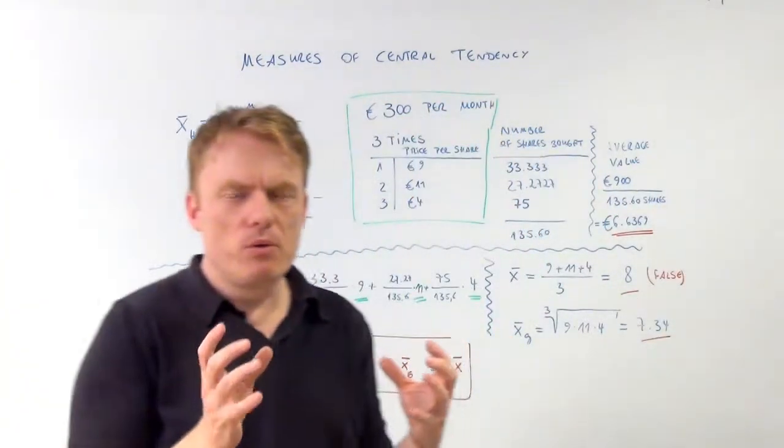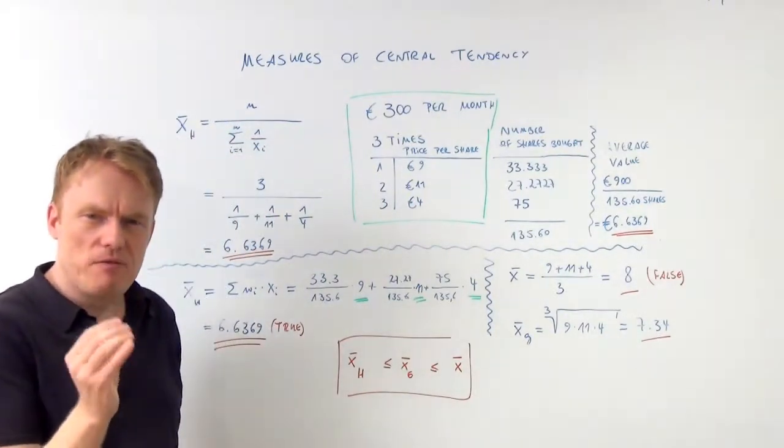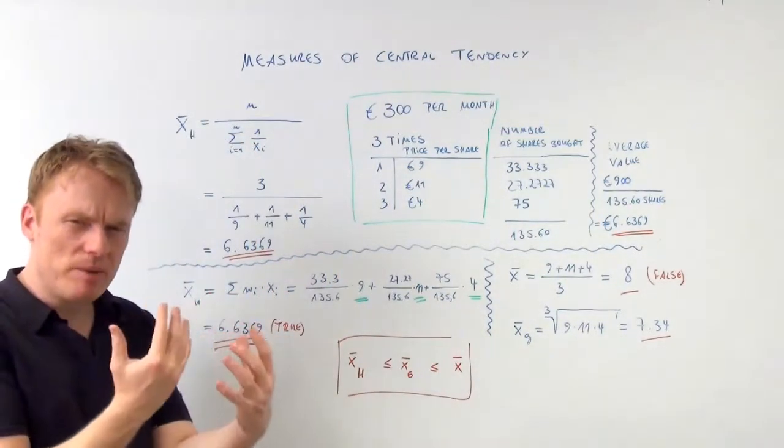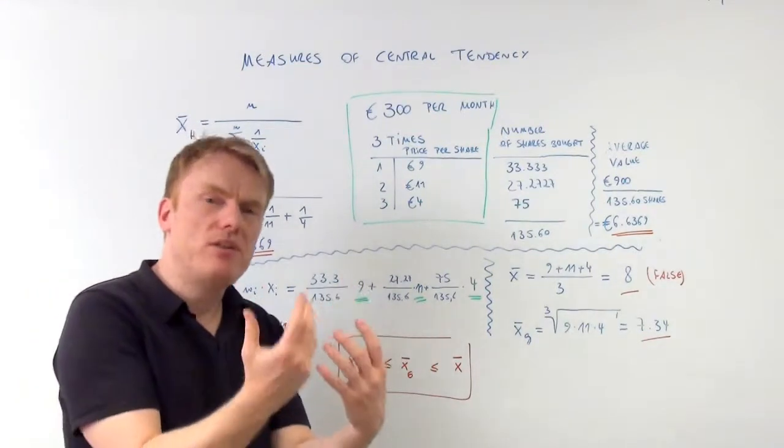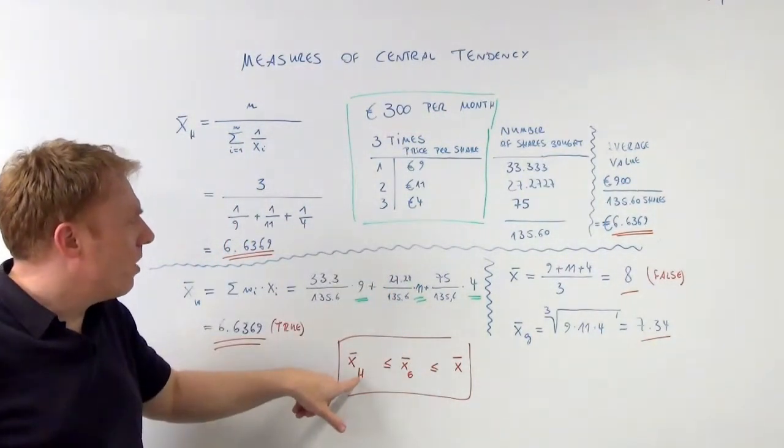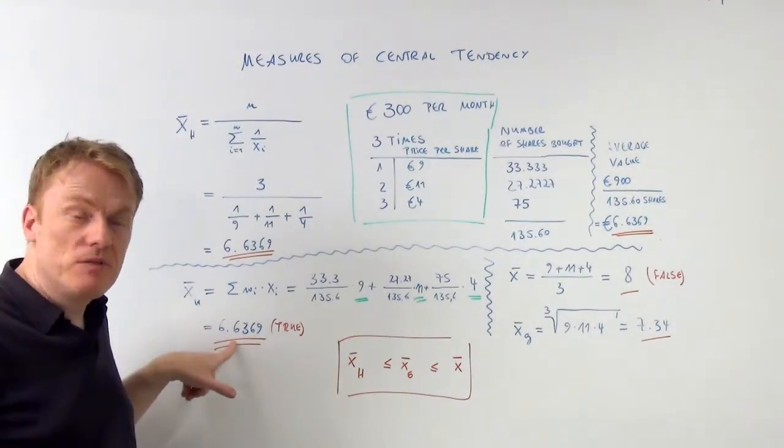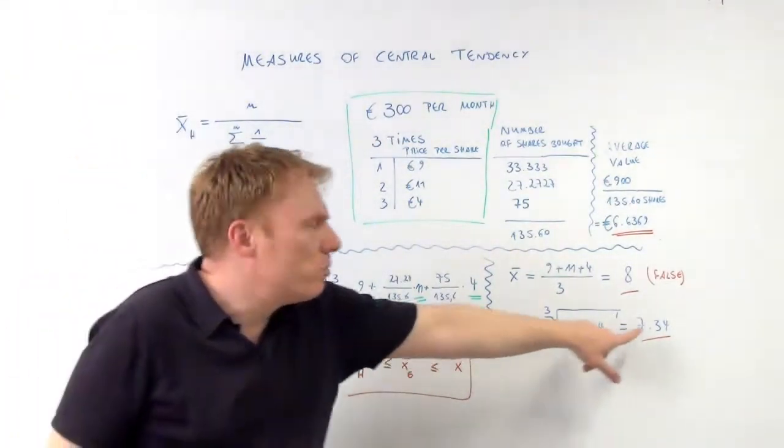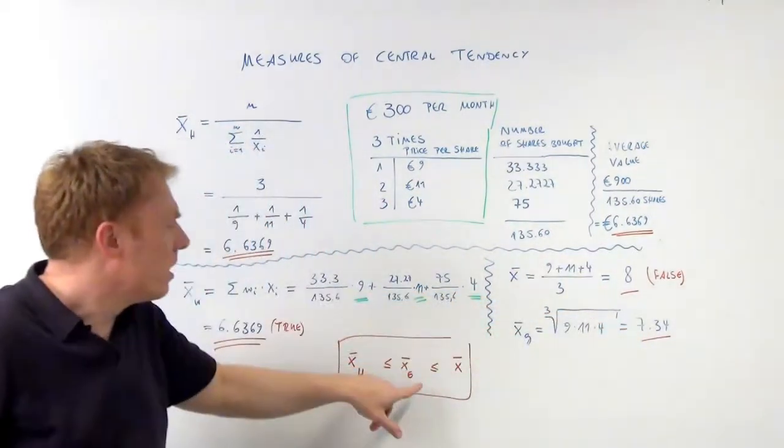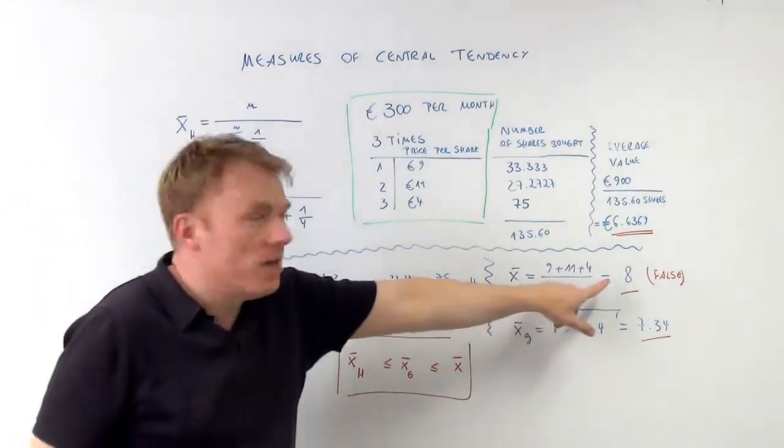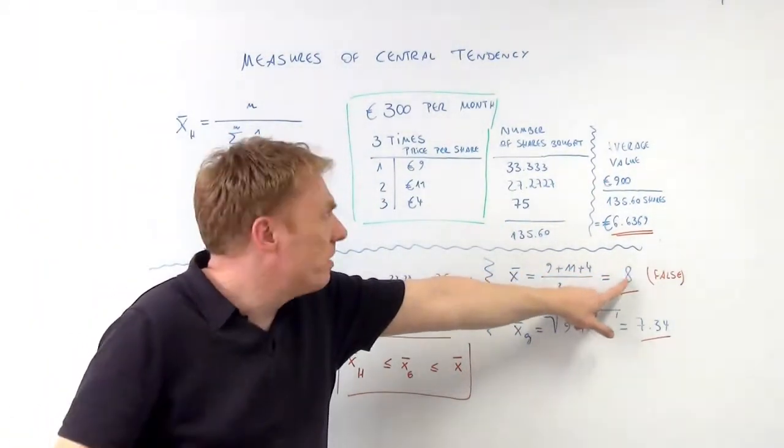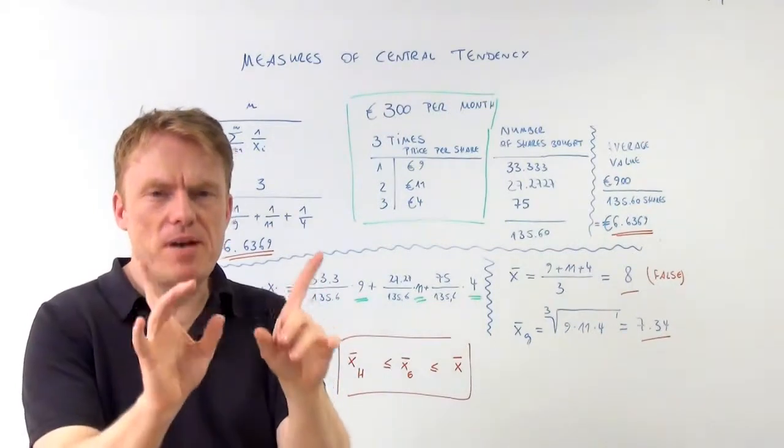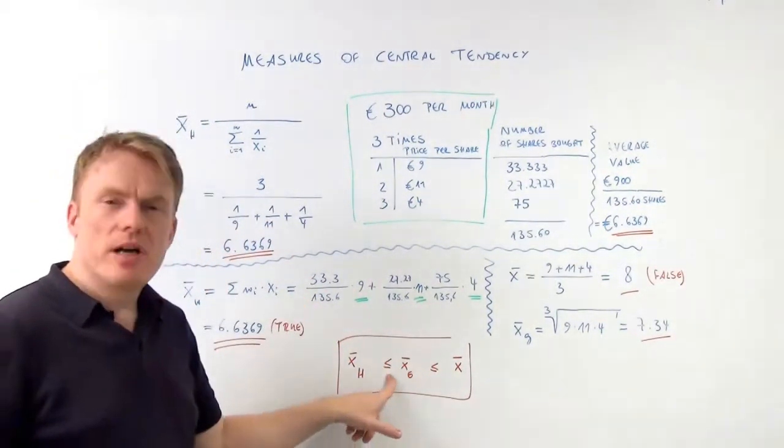So this gives us all in all a comparison, a very important comparison between the arithmetic, the geometric and the harmonic mean. The harmonic mean could also be duplicated using the weighted arithmetic mean. And important to know, the harmonic mean of 6.64 is strictly inferior or equal to the geometric mean with 7.34 and inferior or equal to the arithmetic mean, the unweighted arithmetic mean of 8 euros. So provided the values are different, provided that not every value is the same, we have the sign strictly inferior.